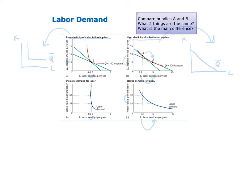So to summarize, the lower the elasticity of substitution between inputs, the more inelastic the demand for each input will be. The higher the elasticity of substitution between inputs, the more elastic the demand for each input will be.